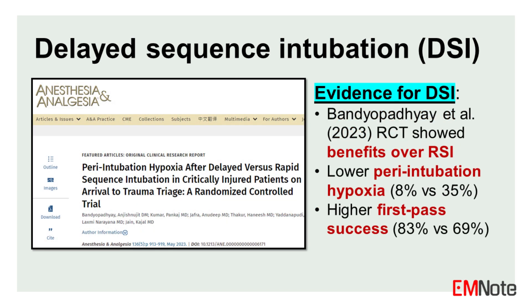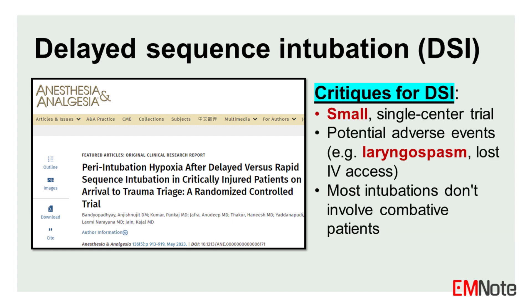Evidence. In 2023, a randomized controlled trial was published comparing DSI to RSI in trauma patients requiring emergent intubation. The trial found that, when compared to RSI, DSI was associated with significantly lower rates of peri-intubation hypoxia — 8% versus 35% — and higher first-pass intubation success — 83% versus 69%. However, critics argue that routine use of DSI based on this single, low-quality trial represents premature adoption of an unproven technique.